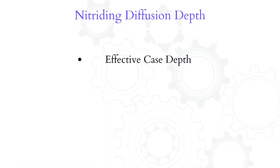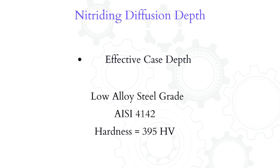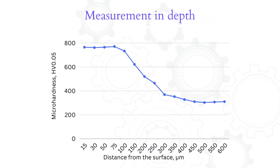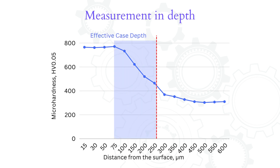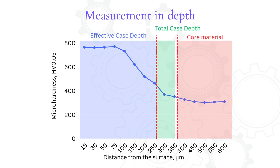The effective case depth, on the other hand, is given as standard hardness values specific to different steels, at which the layer is defined to end. For AISI 4142, for example, this value is 395 HV. In our example using standard process results for these gears, we measure a cross-section sample with Vickers starting from the surface towards the core. Placing the marker at 395 HV gives us the effective case depth. The average core value is about 300 HV, and we add 50 HV to that to determine where the total case depth ends.